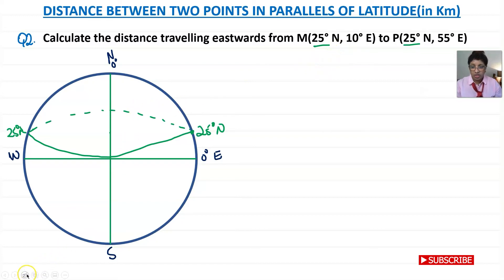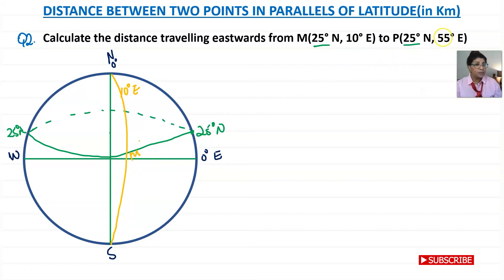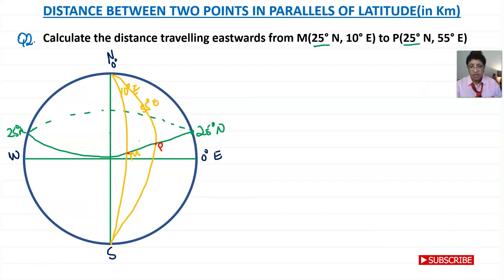There's your small circle located at 25 degrees north. Now point M is at 10 degrees east — east is on this side — so let's say this is 10 degrees east: that's point M. Point P is on the same small circle at 55 degrees east, which is roughly here. So this object has moved from M to P, giving us an arc, and that's our center.